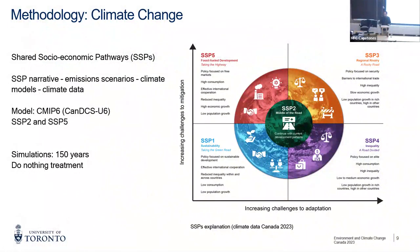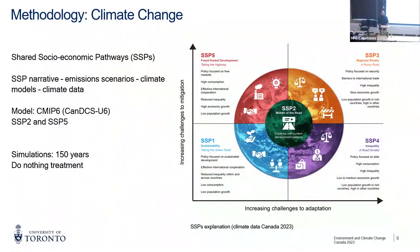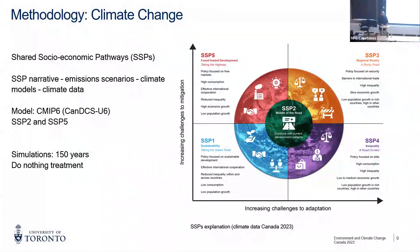For climate change, we are considering the SSP2 and SSP5 scenarios — Shared Socioeconomic Pathways. In general terms, SSP5 is fossil-fuel based but with reduction in global inequality, while SSP3 and SSP4 scenarios maintain or increase inequality. We chose SSP5 and SSP2; SSP2 is kind of the middle-of-the-road scenario. We use the CMIP6 model with bias correction for Canada using the Canadian model, and we run 150 years under the do-nothing treatment for the climate change scenarios.